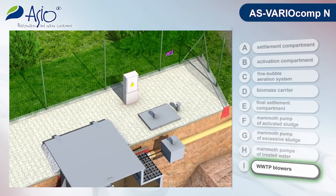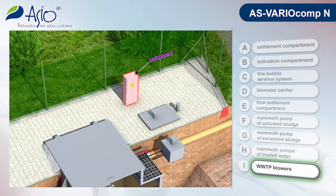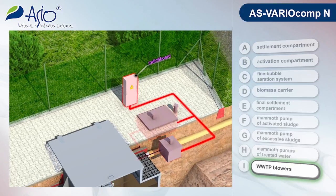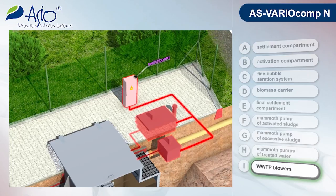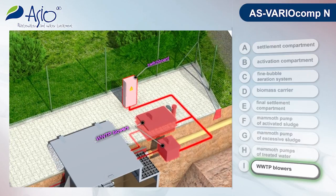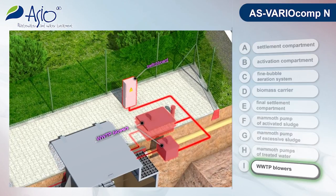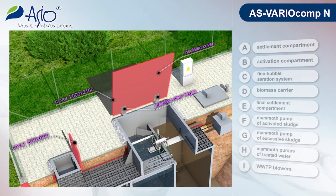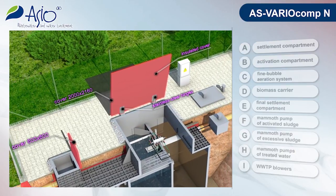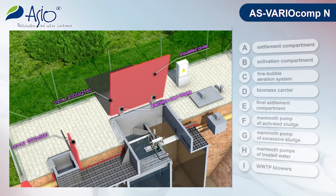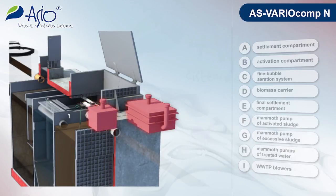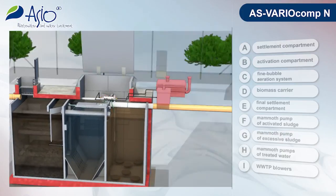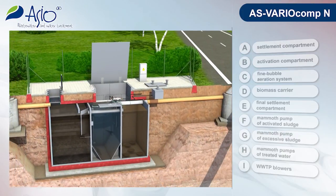The blowers are controlled by an automatic system installed in the plant's electric switchboard. Automatic control of the blower pair ensures low energy and well-managed operation. The plant is fitted with an insulated cover that can be tilted on stainless steel hinges. The blowers are located in a plastic shaft embedded in the terrain next to the plant.